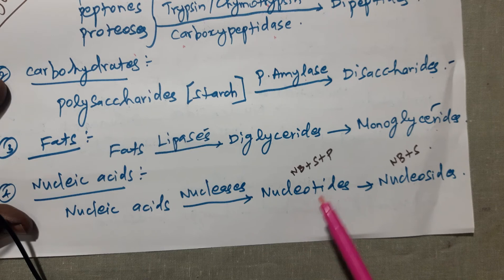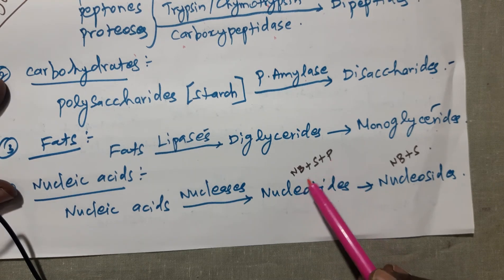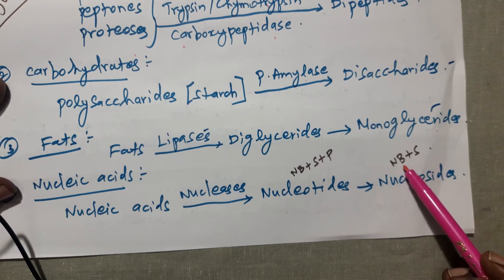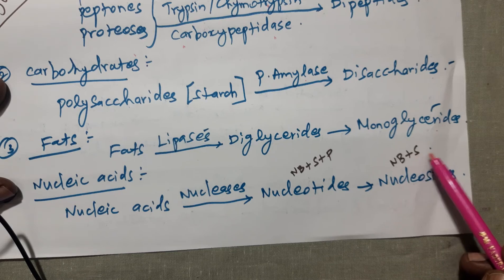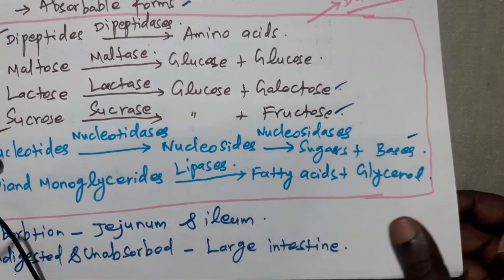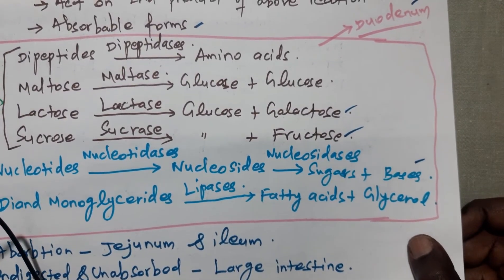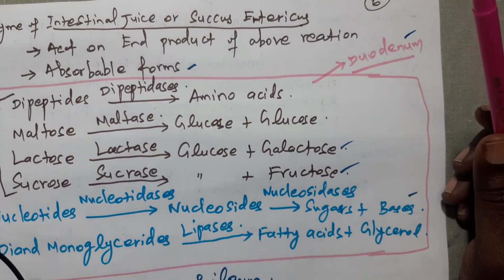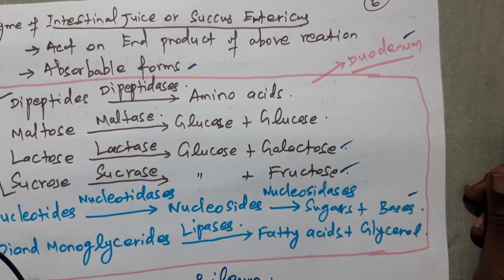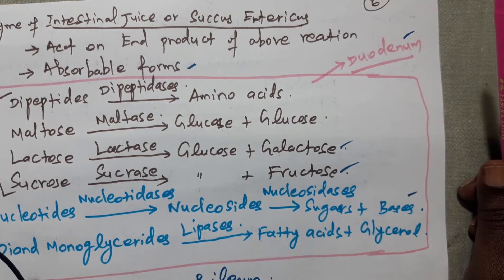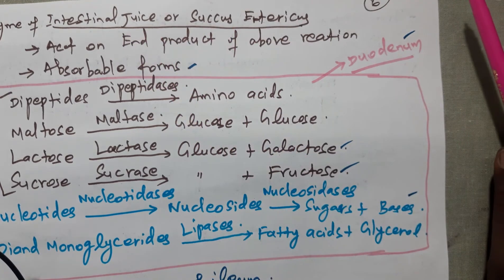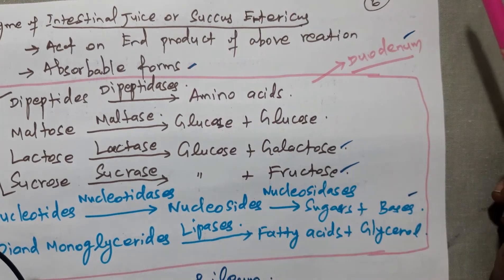Nucleotides — consisting of nitrogenous base, sugar, and phosphate molecules — are then converted into simpler nucleosides. Nucleoside means nitrogenous base plus sugar, with phosphate absent. The intestinal juice or succus entericus enzymes act on these substances and convert them into absorbable forms. This is the important function of intestinal juice or succus entericus enzymes.